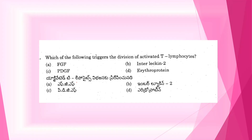Next question. Which of the following triggers the division of activated T lymphocytes? A. FGF. B. Interleukin-2. C. PDGF. D. Erythropoietin.